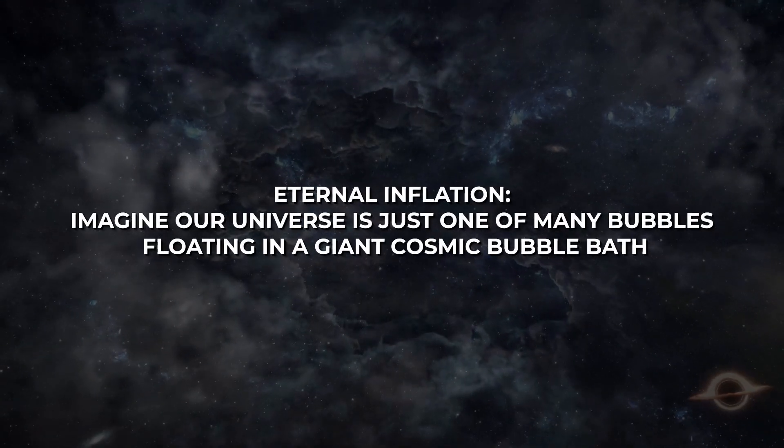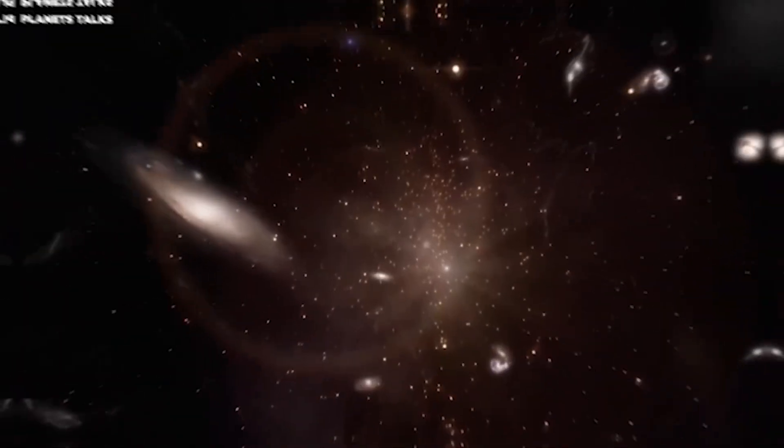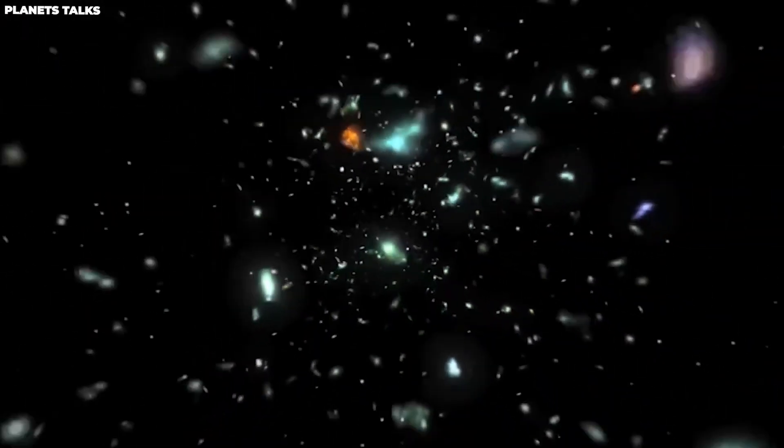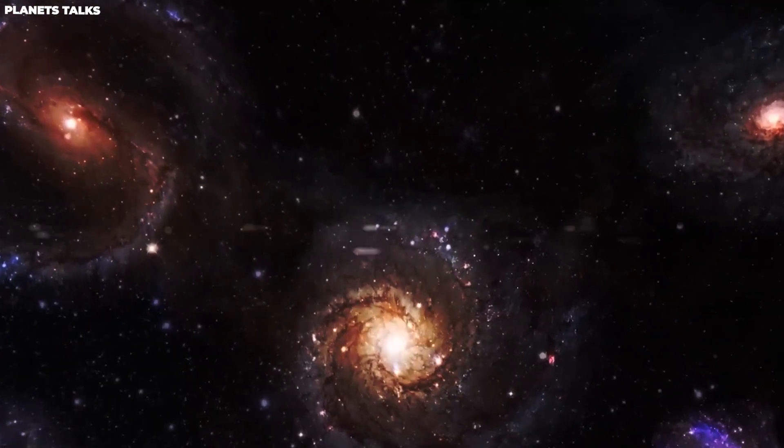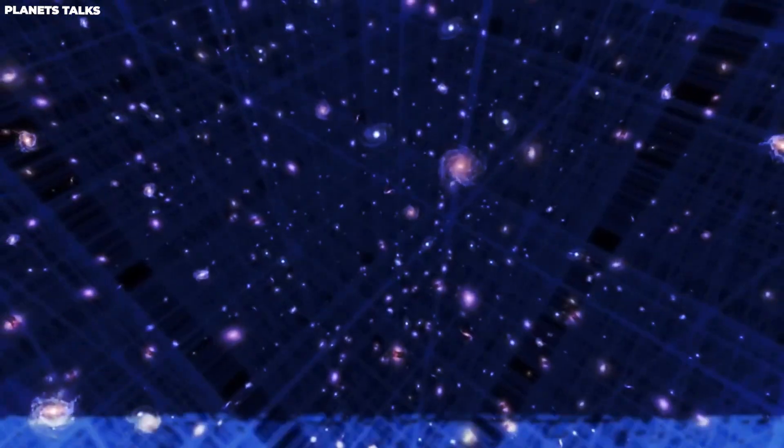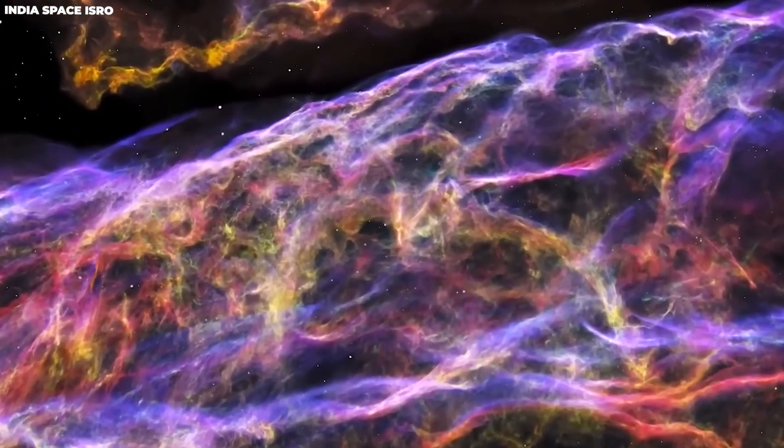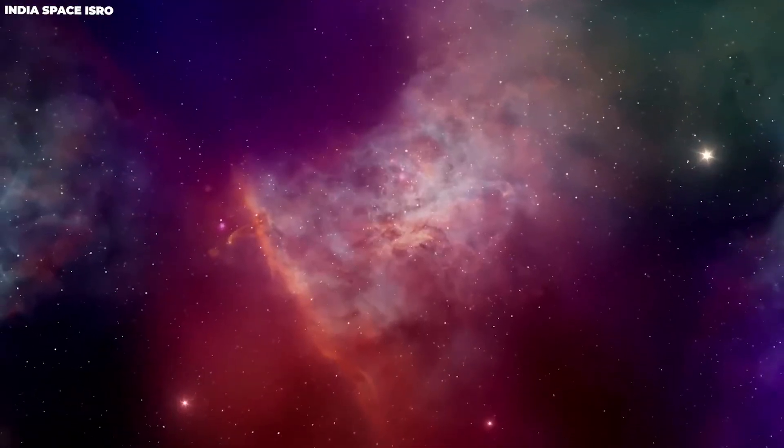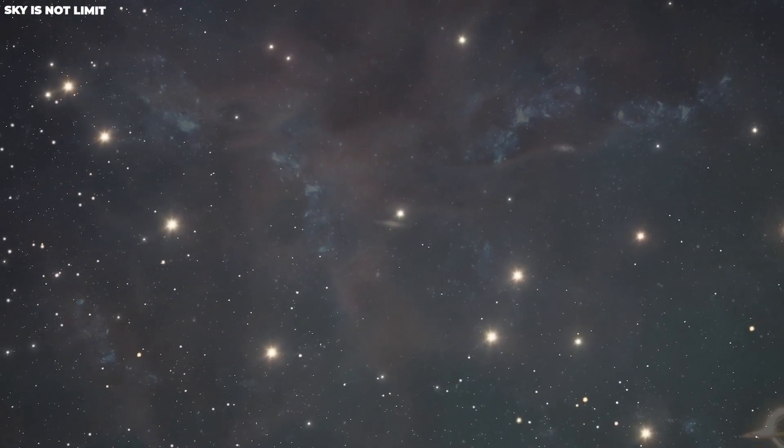Eternal Inflation. Imagine our universe is just one of many bubbles floating in a giant cosmic bubble bath. Each bubble is like a separate universe with its own rules and stuff. This idea is called Eternal Inflation. It's like having a lot of different ice cream flavors, but they're all in their own special containers. The Steady State Theory. Think about the universe as always being there, like a never-ending story. In this theory, the universe has been around forever, and it's still here. It's a bit like having a toy that never runs out of batteries. This idea is called the Steady State Theory, where the universe just keeps on going without a clear beginning. It's like a never-ending book with no first page.